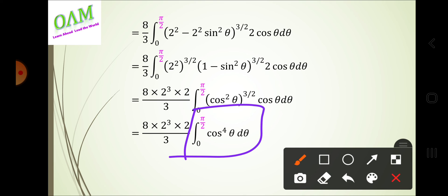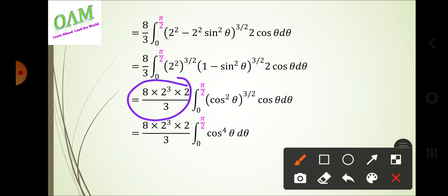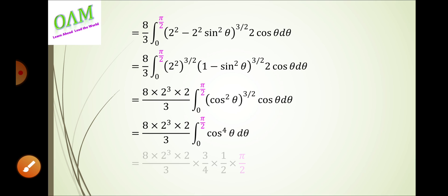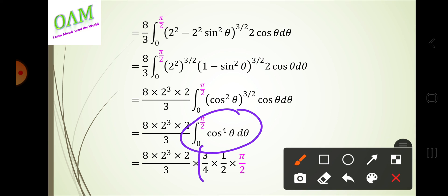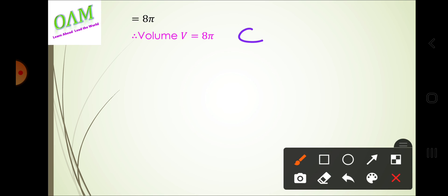Let's evaluate this using the reduction formula. If the numbers are in the product form, the answer simplifies easily. Applying the reduction formula, the values are: 3/4 × 1/2 × π/2. This gives 4 × 2 = 8. Therefore, volume V = 8π cubic units.